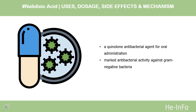Pharmacodynamics: Nalidixic acid is a quinolone antibacterial agent for oral administration. It has marked antibacterial activity against gram-negative bacteria including Enterobacter species, Escherichia coli, Morganella morganii, Proteus mirabilis, Proteus vulgaris, and Providencia rettgeri. Pseudomonas species are generally resistant to the drug. Nalidixic acid is bactericidal and is effective over the entire urinary pH range. Chromosomal resistance has been reported to emerge in approximately 2–18% of patients during treatment; however, bacterial resistance has not been shown to be transferable via R-factor.